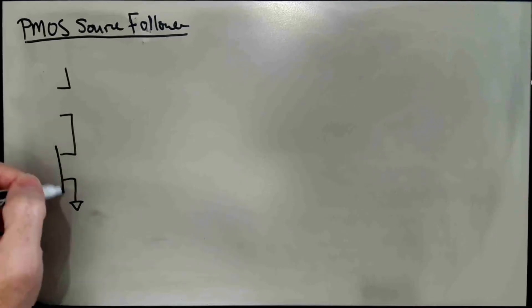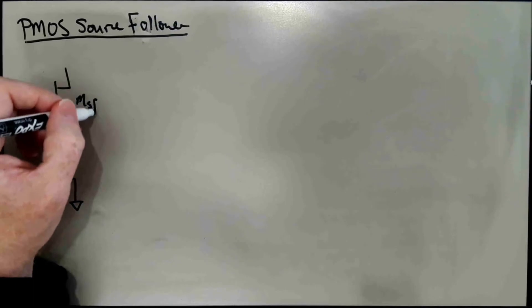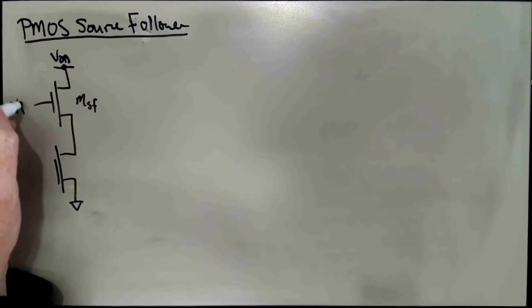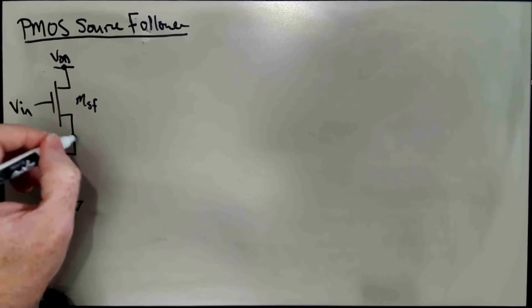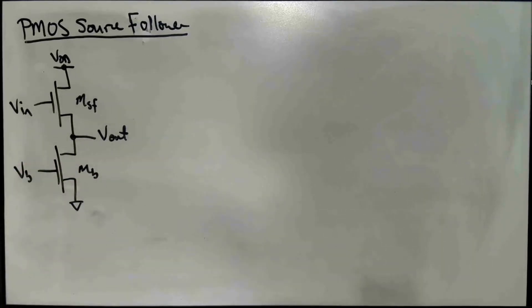And that process I would describe as flipping the circuit upside down. So this is the NMOS version of the circuit. We have two transistors: the source follower transistor. There's input voltage on the gate and output voltage in the source. And then we have a bias voltage VB with MB. To flip this thing upside down, we literally convert NMOS transistors into PMOS transistors.